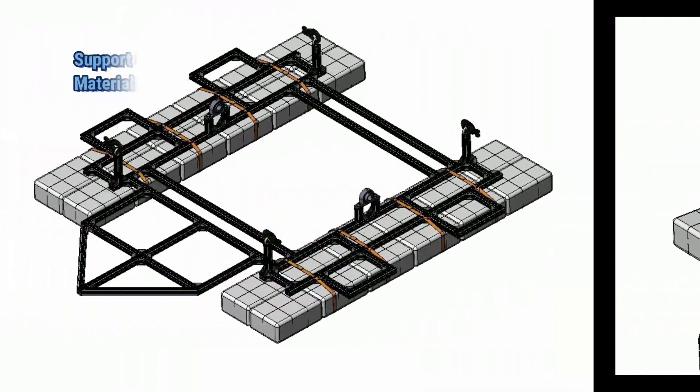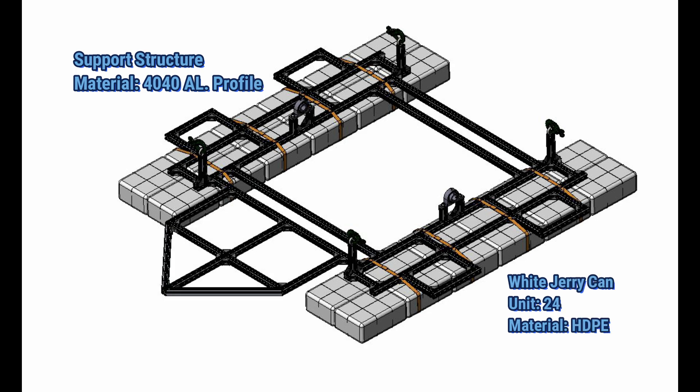The waterwheel structure is made of 40x40 aluminum profile and the floating pontoon consists of 24 units of white jerry cans.